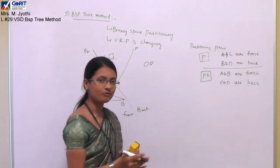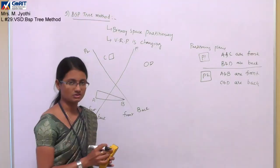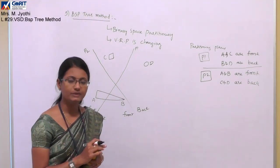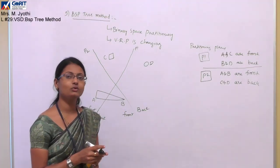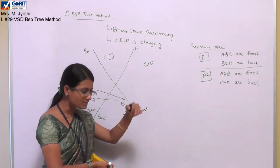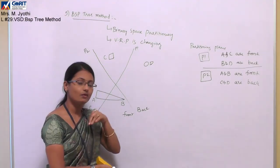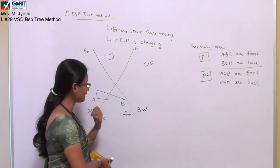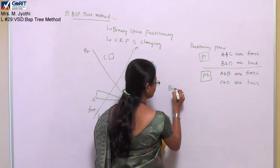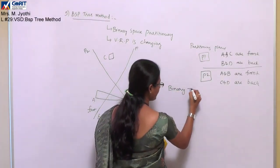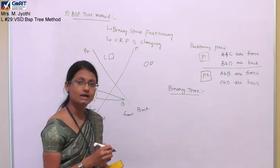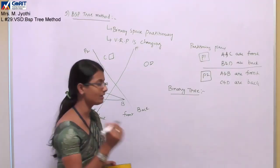Once the first round of partitioning is finished, we need to draw the binary partition tree. For the binary tree, we consider front and back nodes. I want to consider partitioning plane P1 as my root node. For P1, we have two edges — the left edge always represents the front objects and the right edge represents the back objects.